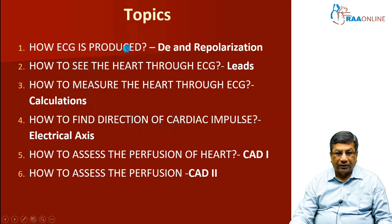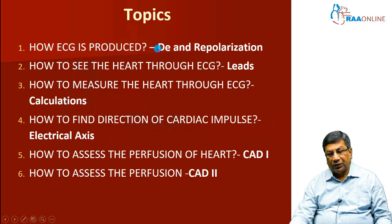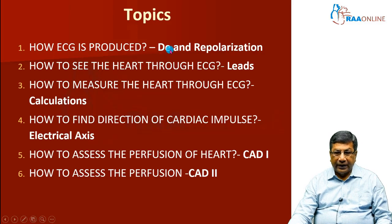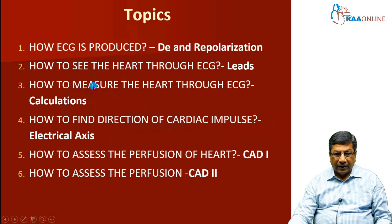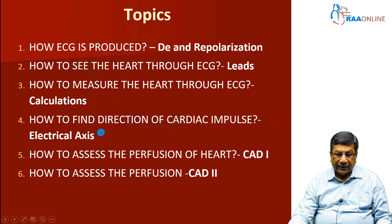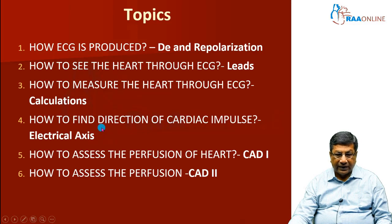The first topic is how the ECG is produced — we look at the conduction system of the heart and depolarization. The second topic is how to see the heart through the ECG, understanding the lead systems. Third is how to measure the heart through ECG — calculations and measurements of various ECG waveforms. The fourth topic is how to find the direction of the cardiac impulse, which is the calculation of the electrical axis — in which direction the net cardiac impulse is traveling inside the heart.